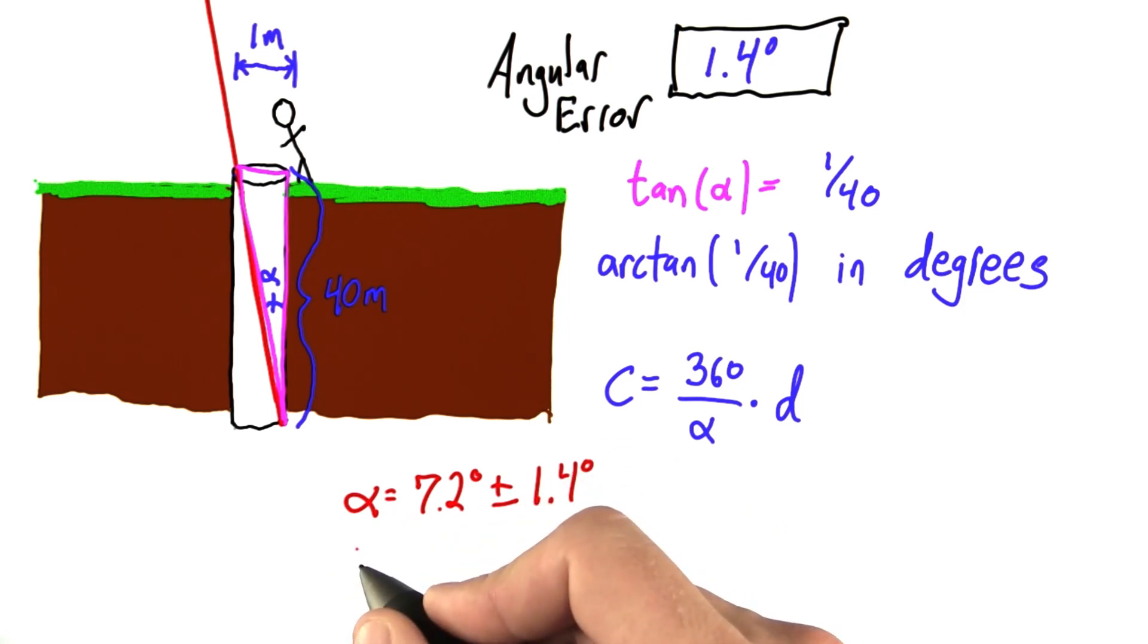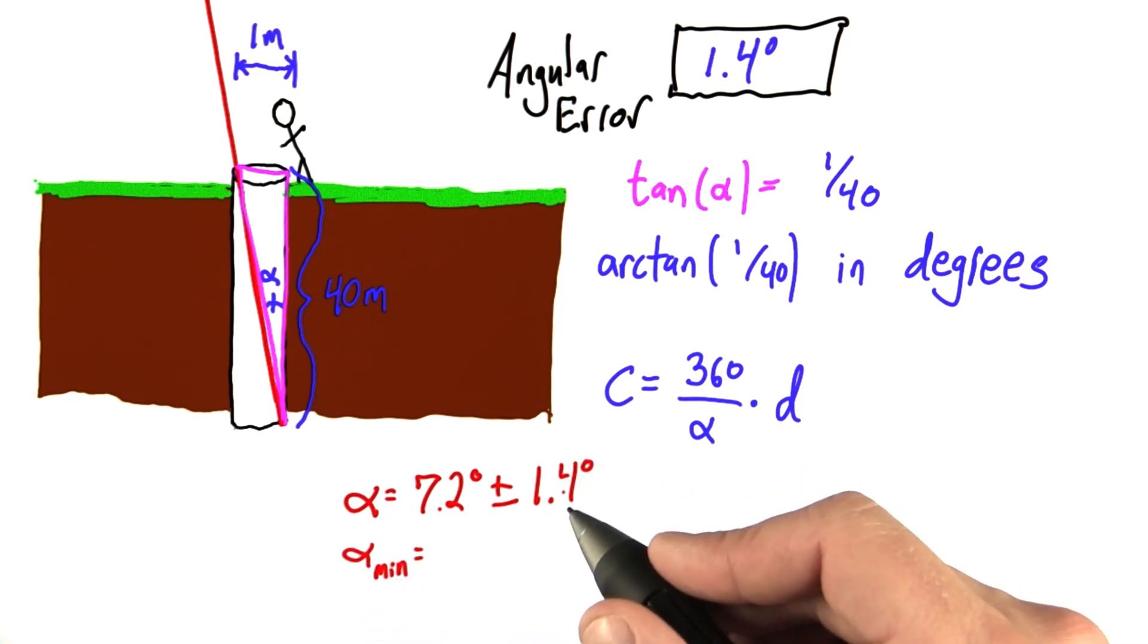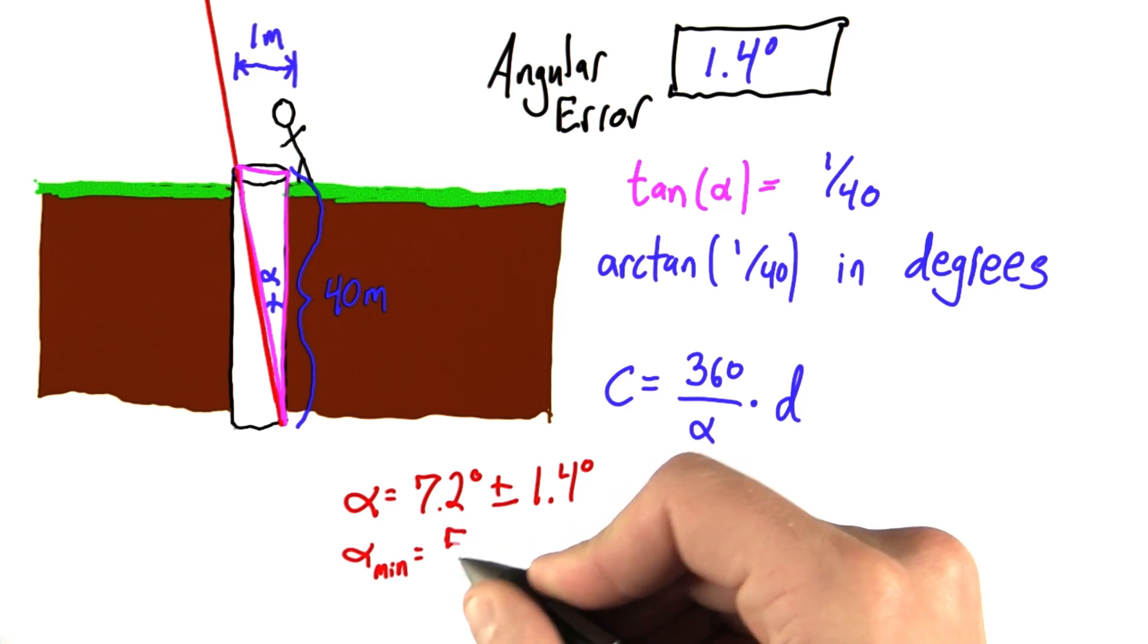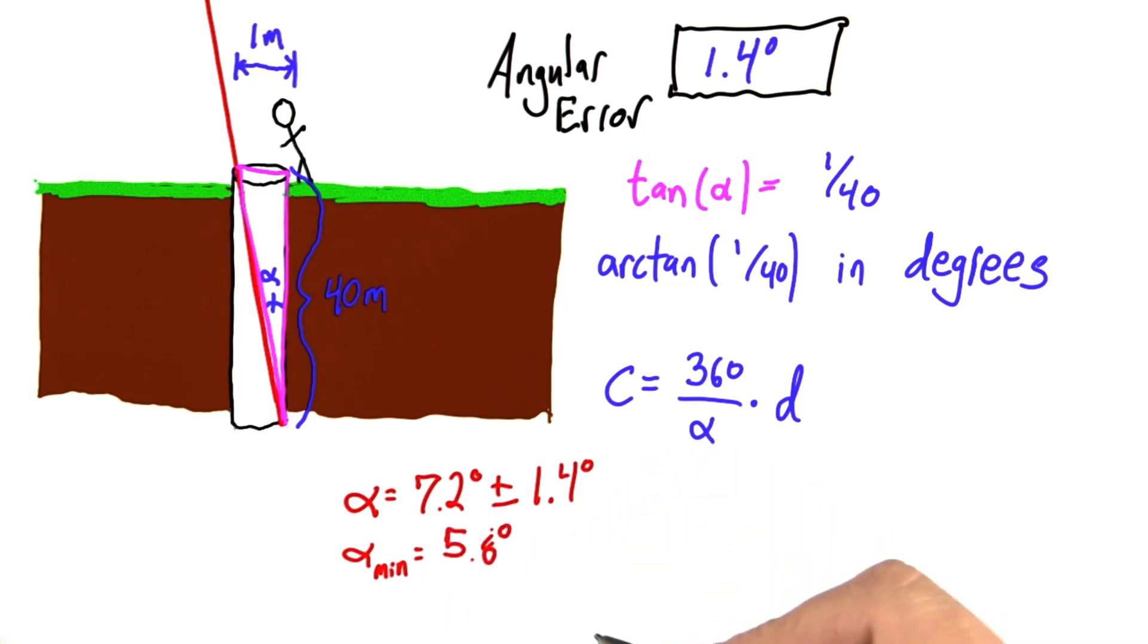So the smallest alpha could be, I'll say alpha min would be 7.2 minus 1.4, which would be 5.8 degrees. And alpha max would be 7.2 plus 1.4, which would be 8.6 degrees.